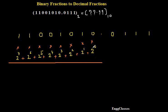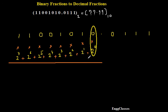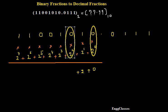So, 0 into 2 to the power 0 — I'll leave this because 0 into any number turns out to be 0. So I write 0, plus 1 into 2 to the power 1. 2 to the power 1 is 2, and 1 times 2 gives 2. Plus 0 into 2 to the power 2 — that is 4 into 0, which is 0. Plus 1 into 2 to the power 3 — 2 to the power 3 is 8, and 8 into 1 is 8.